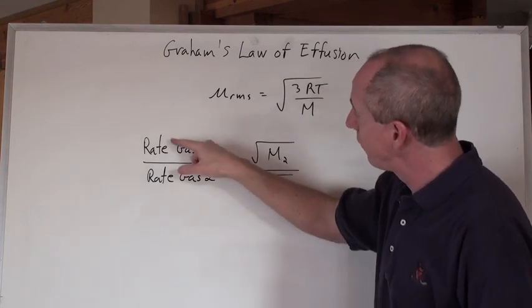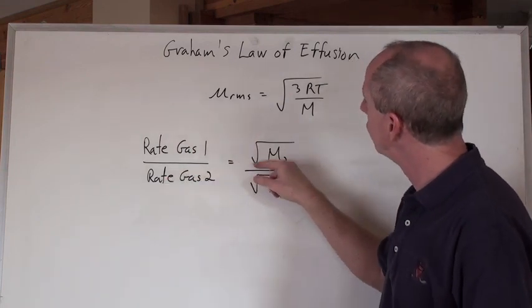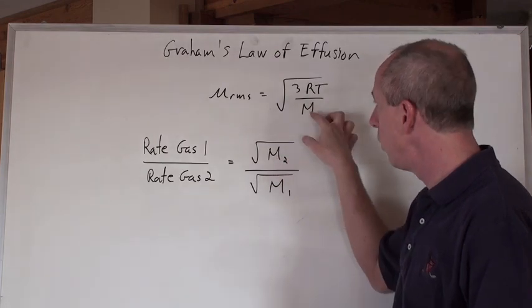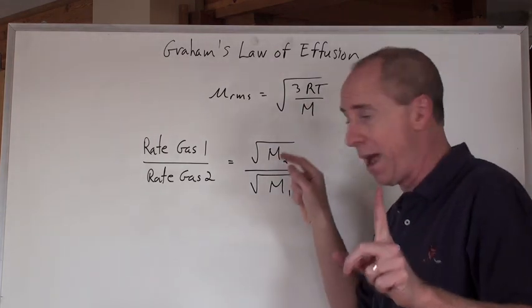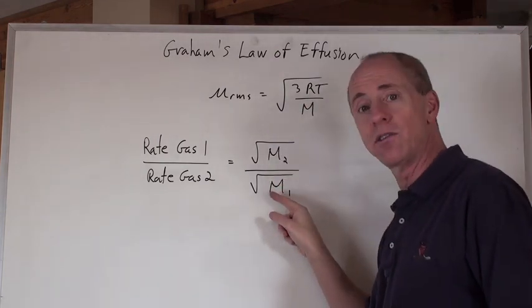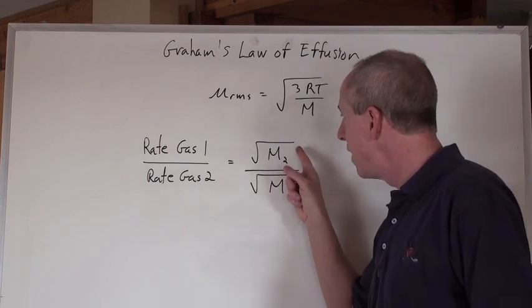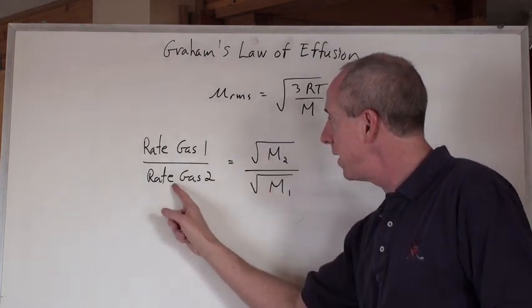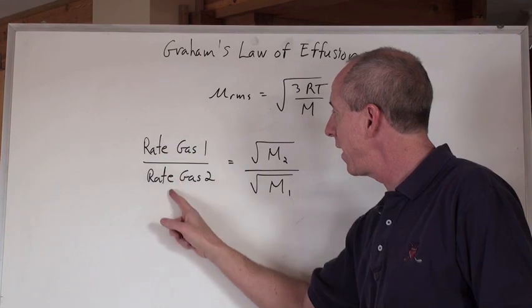And the rate of gas 1 over gas 2 equals the square root of the molar mass, it's not the molar mass, but the square root of the molar mass of gas 2 over gas 1. If you make that the heavy gas, then that one there, the heavy one here, that light gas over that heavy gas...